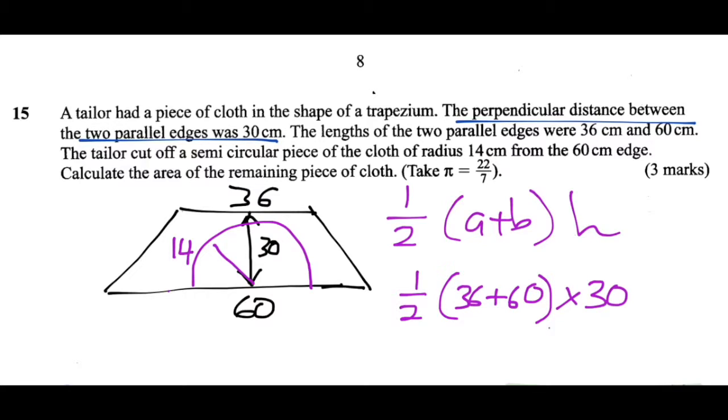So that's the same as a half multiplied by 96 multiplied by 30. And when we put this into our calculators,